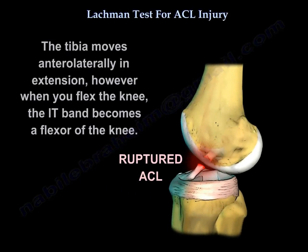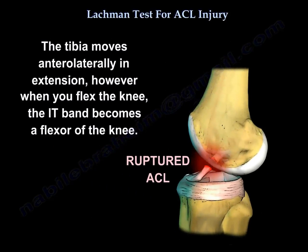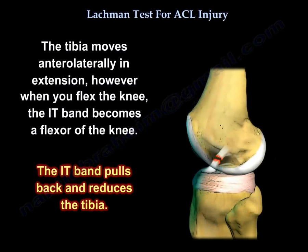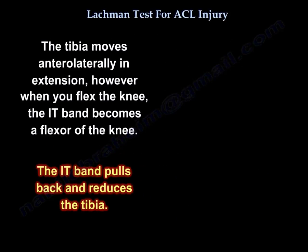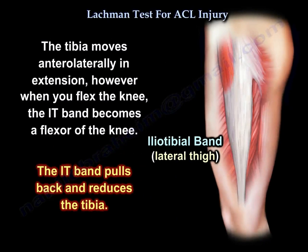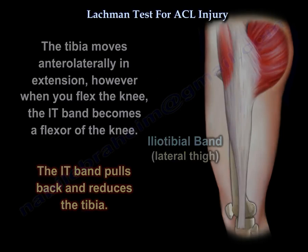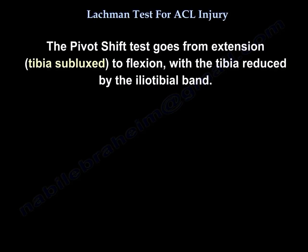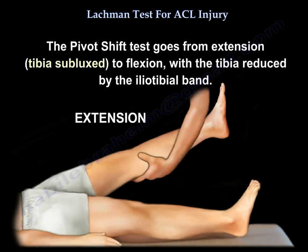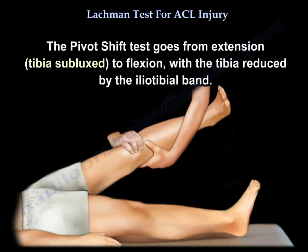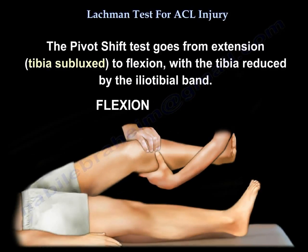Rupture of the ACL causes anterolateral rotatory instability. The tibia moves anterolaterally in extension; however, when you flex the knee, the IT band becomes a flexor of the knee. The IT band pulls back and reduces the tibia. The pivot shift test goes from extension — where the tibia is subluxed — to flexion, where the tibia is reduced by the iliotibial band.